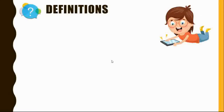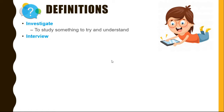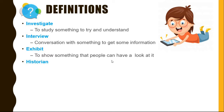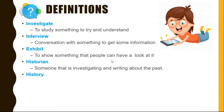The following definitions will be important for this part of the lesson. Investigate is to study something to try and understand it. An interview is a conversation with someone to get some information. An exhibit is to show something that people can have a look at. A historian is someone that is investigating and writing about the past.